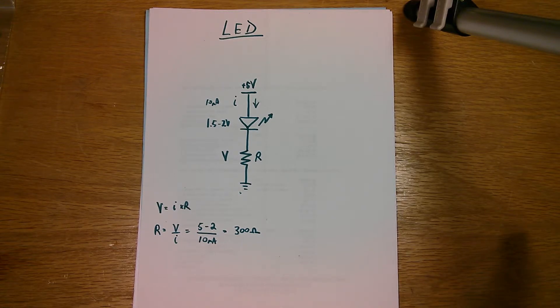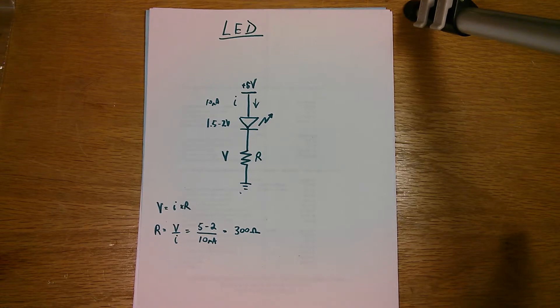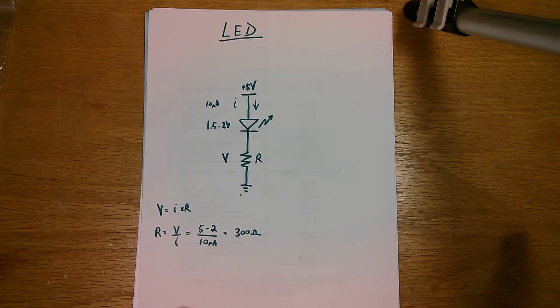They are manufactured in what's called preferred values. And the typical quarter watt carbon film resistor, 5% resistor, comes in a range of preferred values. And 300 ohms is not one of those values.